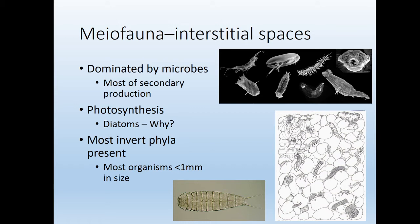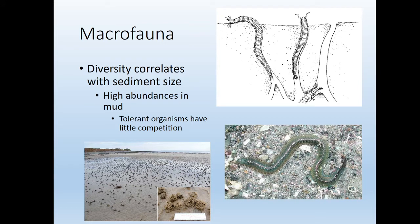Getting a bit bigger and thinking about animal phyla, you find pretty much everything — arthropods, mollusks, all types of worms — but they're all super tiny. For macrofauna, diversity correlates with sediment size: the coarser the sediments, the more diversity you find. But that doesn't necessarily mean abundance. In mud, like near an estuary, you find very low diversity but really high abundance.